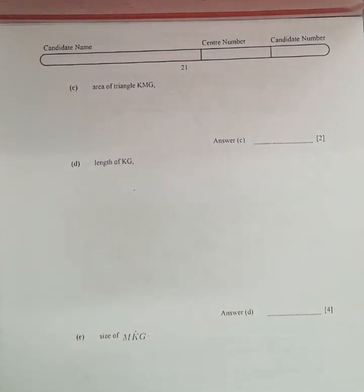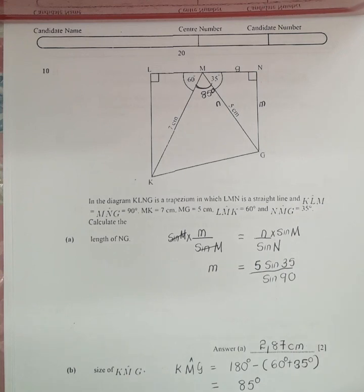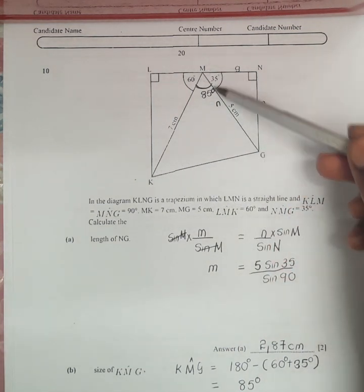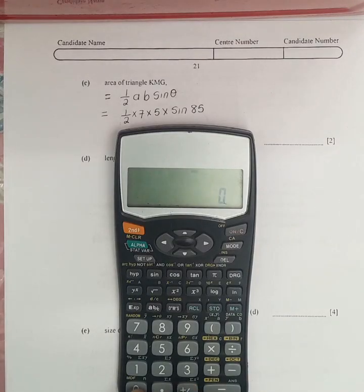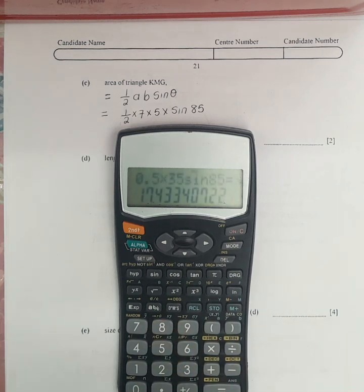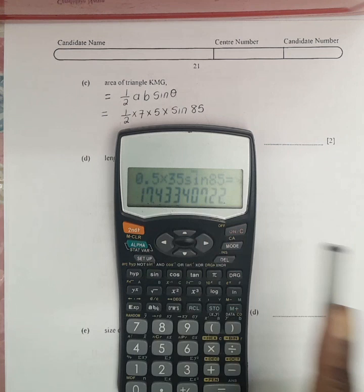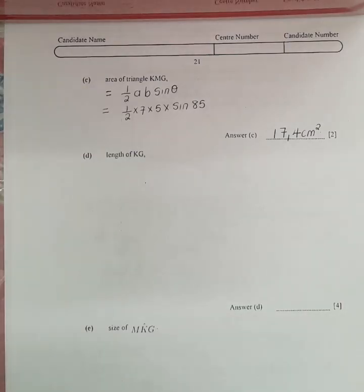In part C, we want to calculate the area of triangle KMG. To find the area we use the formula: half times a times b times sin theta. It is half times 7 times 5 times sin 85. Punching on the calculator: half times 35 times sin 85, we obtain 17.433. Rounding to three significant figures we obtain 17.4 square centimeters.